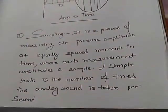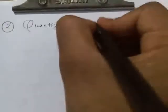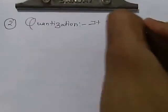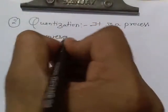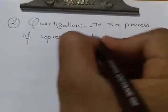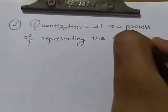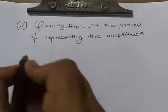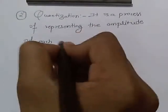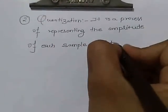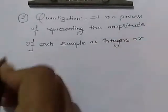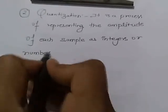So this is the first step of digitization. The second step is quantization. Quantization is a process of representing the amplitude of each sample as integers or numbers.